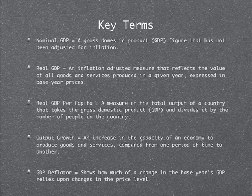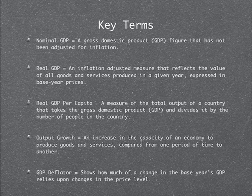Output growth is an increase in the capacity of an economy to produce goods and services compared from one period of time to another. The GDP deflator shows how much of a change in the base year's GDP relies upon changes in the price level.